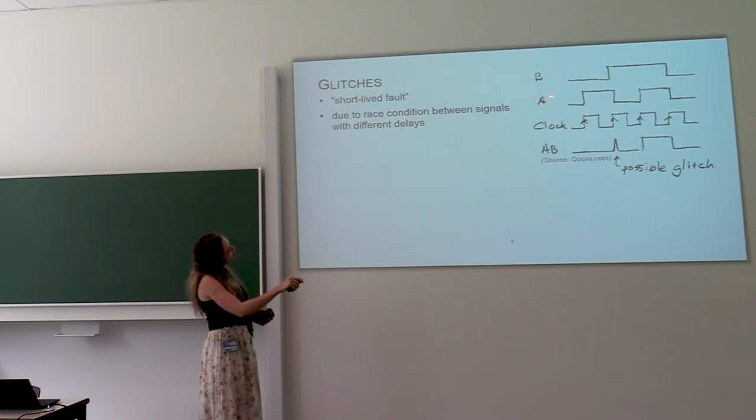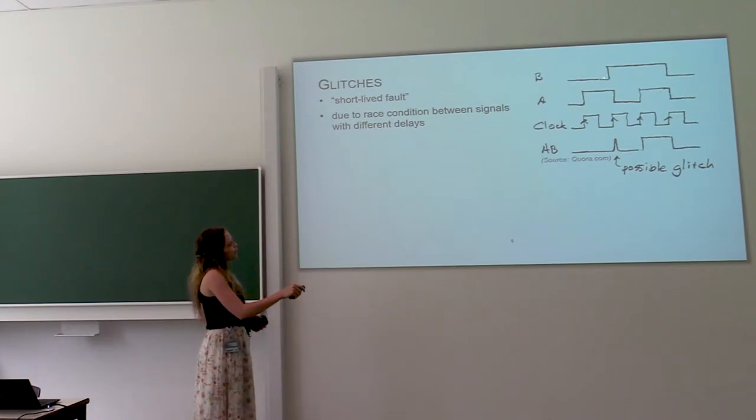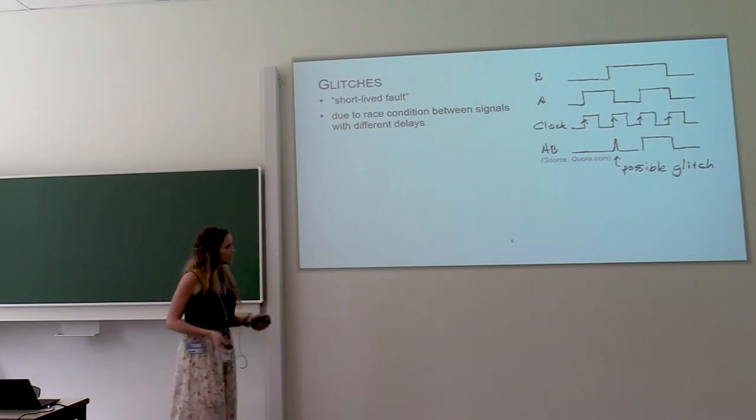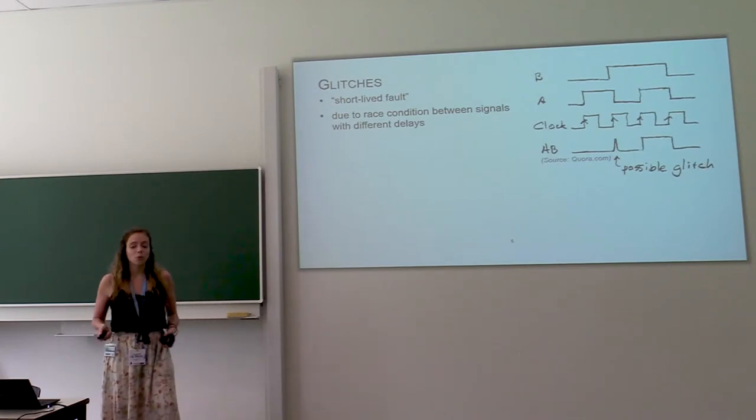In this example, B is zero and then A becomes zero, so the product AB should stay zero. But because the signal B arrives just before A, there is this temporary fault in the signal AB. So this is a transition that should not happen and we also don't want it to happen.